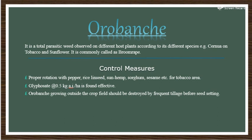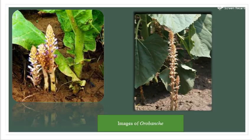Glyphosate at 3.5 kg active ingredients per hectare is found effective. Orobanche growing outside the crop field should be destroyed by frequent tillage before seed setting. This is an image of Orobanche parasitic weed.